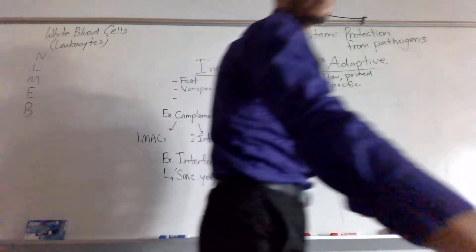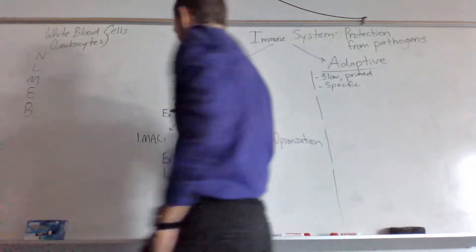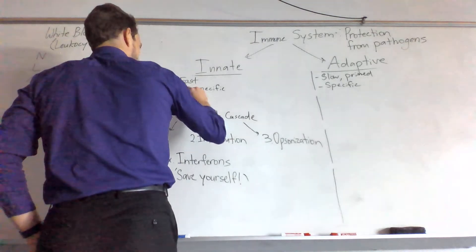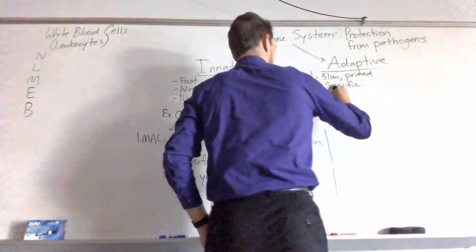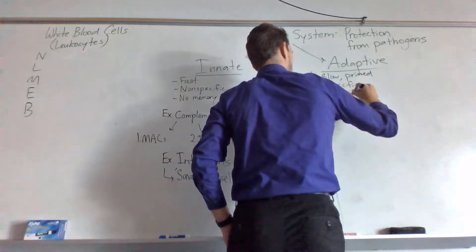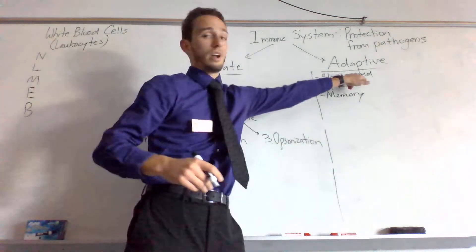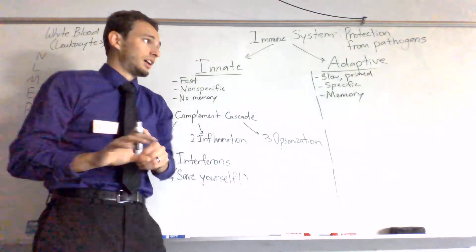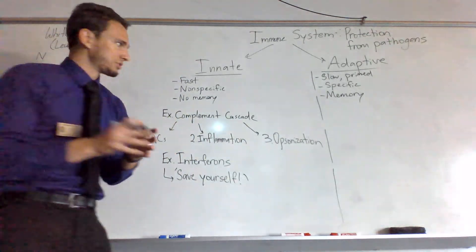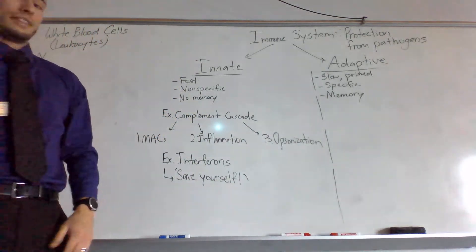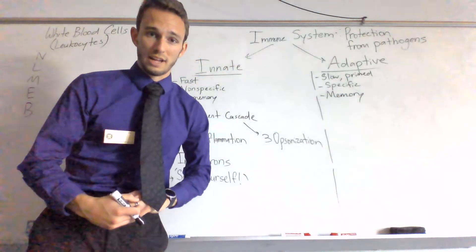The innate system is nonspecific. It will just basically destroy, eat any sort of pathogen that comes in random willy nilly. However, the adaptive is incredibly specific to the specific tag on that microorganism called an antigen. And then lastly, the innate does not have a memory, whereas the adaptive will have a memory capability. It's ready to act based upon the memory that it has.